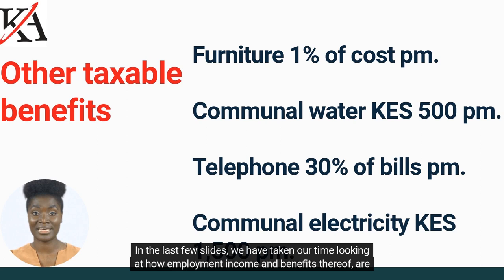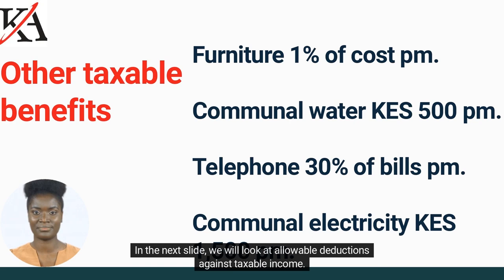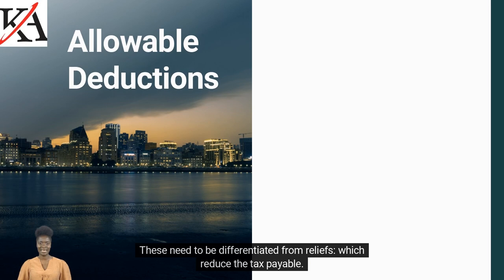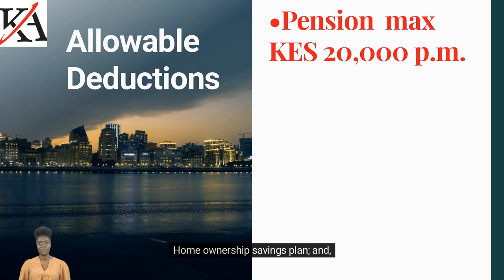In the last few slides, we have taken our time looking at how employment income and benefits thereof are taxed. In the next slide, we will look at allowable deductions against taxable income. Allowable deductions reduce taxable income — this needs to be differentiated from reliefs, which reduce the tax payable. We will be looking at reliefs in the next part of this training. The most common allowable deductions are pension contribution, home ownership savings plan, and owner-occupied interest.